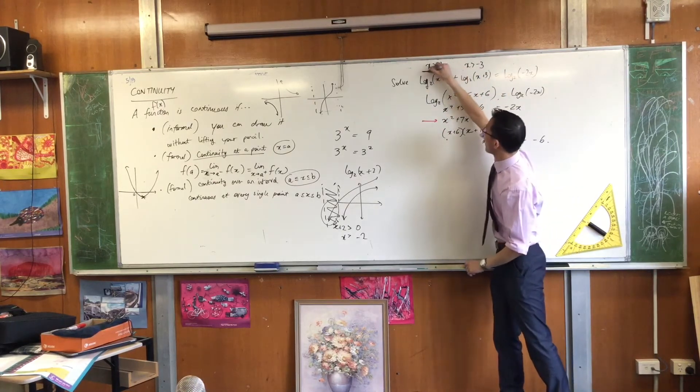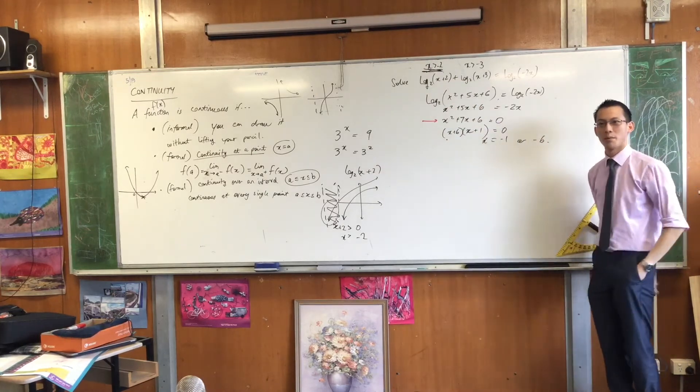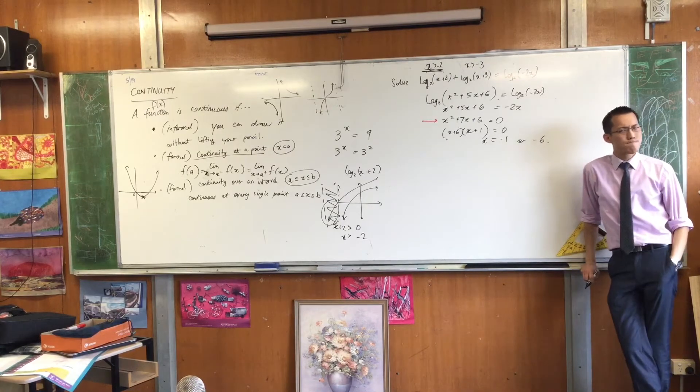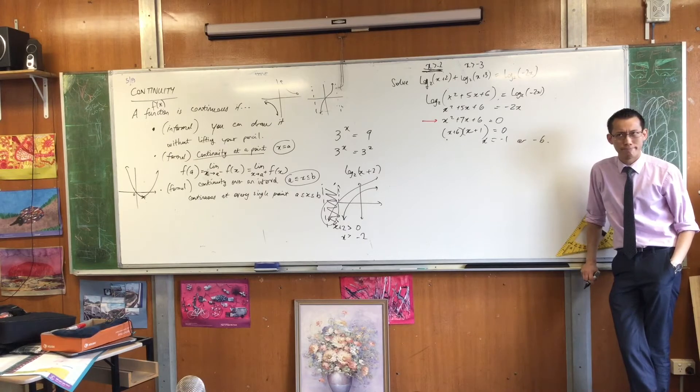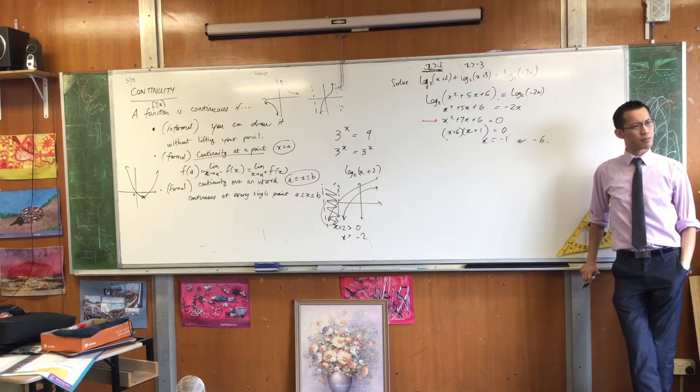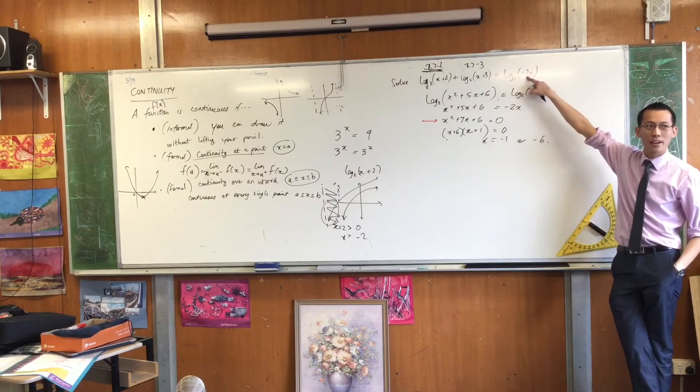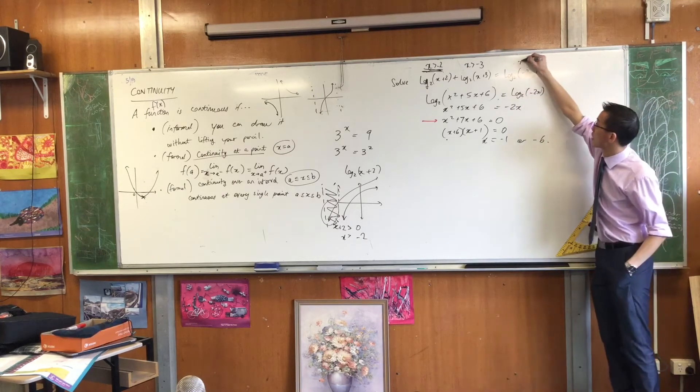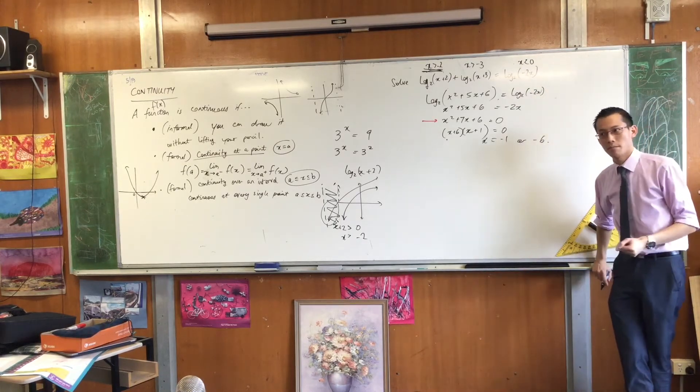There's one more log term, which means there's one more domain restriction. Have a look. It's not log base 2 of x. It's log base 2 of minus 2x. What does that do? Think. Think. What does it do? Eric, what do you say? It means x has to be negative. Okay. The domain restriction I get from here is x is less than zero. The question is why.